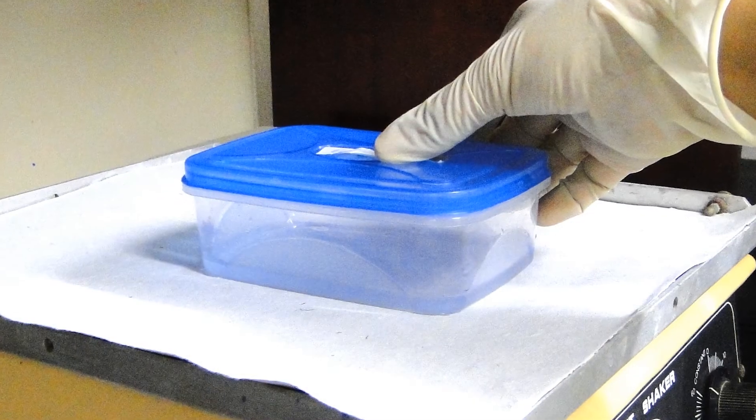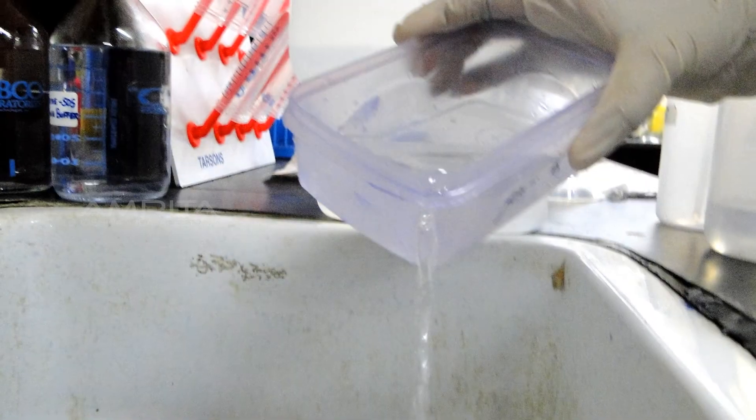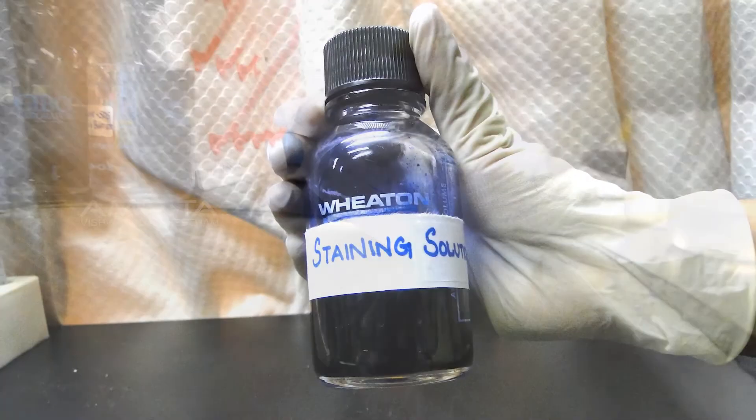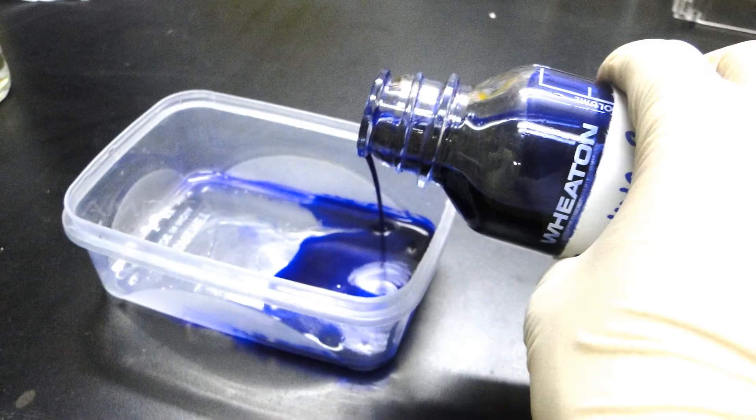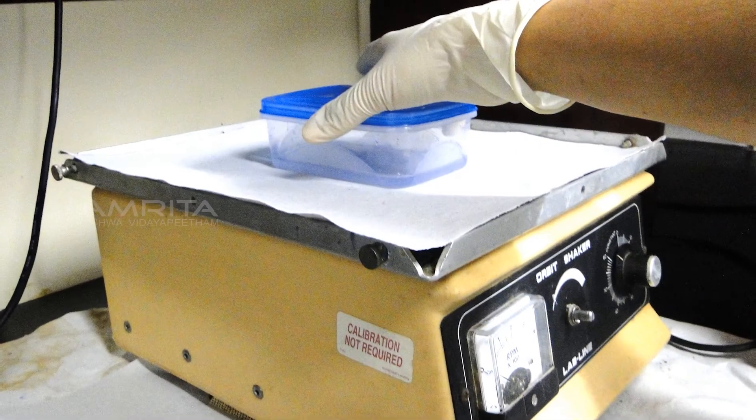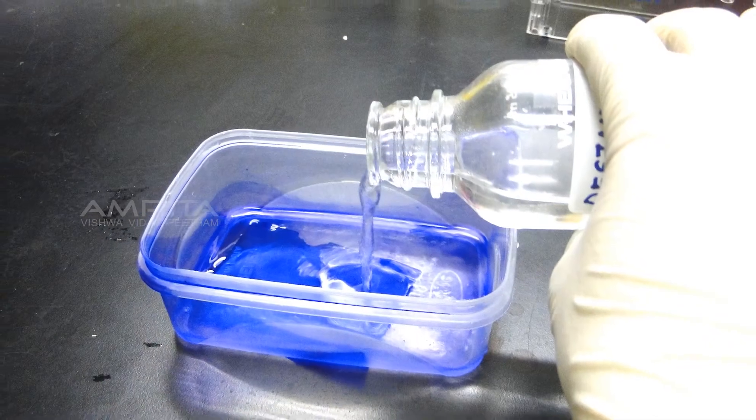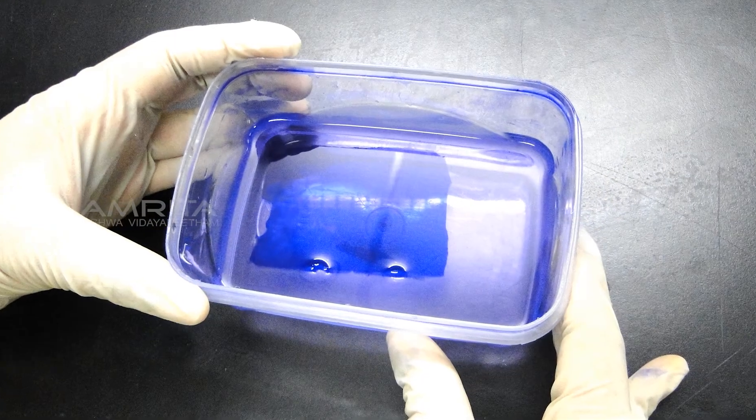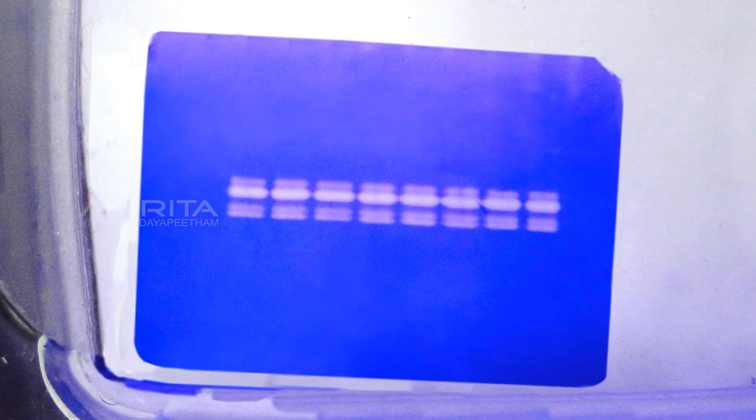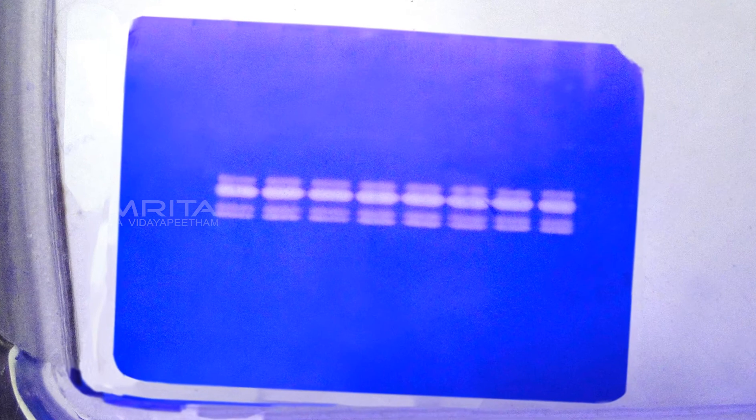After overnight incubation, discard the low salt collagenase buffer and pour staining solution into the gel. Keep it for 30 minutes incubation in orbit shaker. Destain the gel until the bands are properly seen. The presence of gelatinolytic activity of protein samples loaded will be seen as clear bands against a blue background.